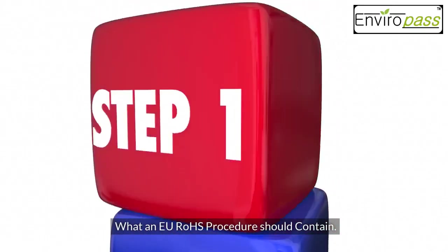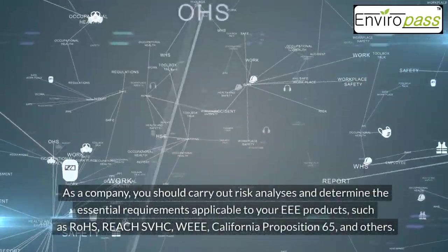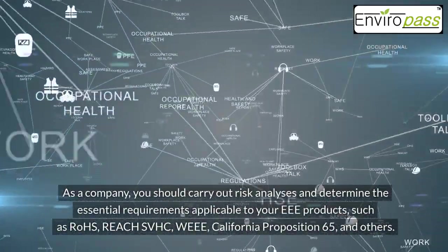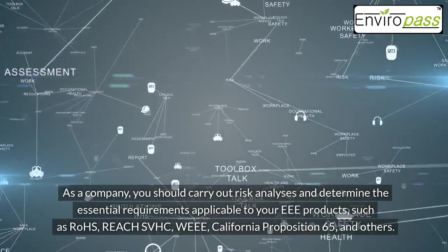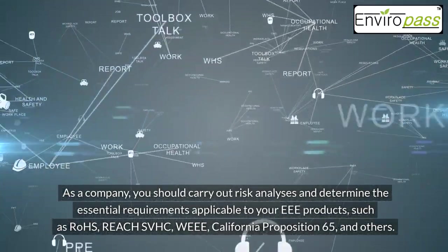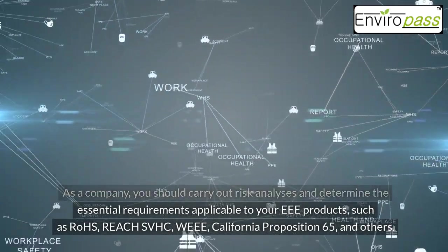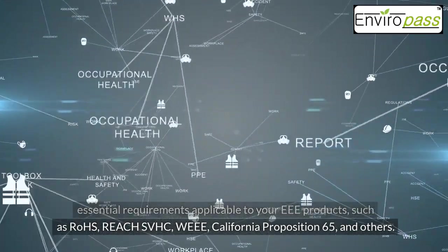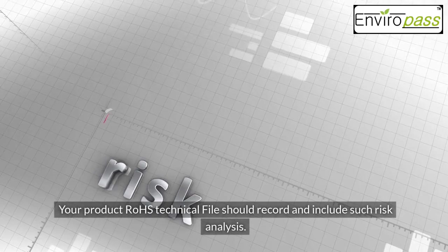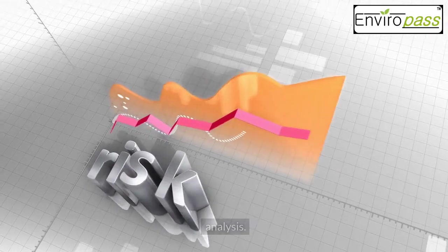What an EU-RoHS procedure should contain? As a company, you should carry out risk analyses and determine the essential requirements applicable to your EEE products, such as RoHS, REACH SVHC, WEEE, California Proposition 65, and others. Your product RoHS technical files should record and include such risk analysis.